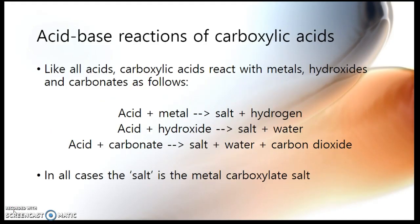Now, finally, because carboxylic acids are acidic, they react with all of the things that normal acids react with. So they react with metals, they react with hydroxides, and they react with carbonates. So, an acid plus a metal will form a salt plus hydrogen. An acid plus a hydroxide forms a salt plus water. And an acid plus a carbonate forms a salt plus water plus carbon dioxide. The salt we're talking about in this case is a metal carboxylate salt.